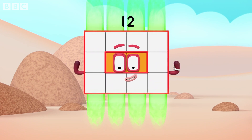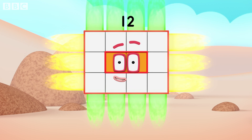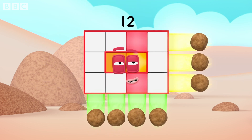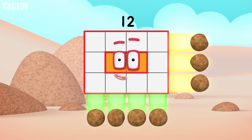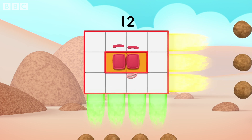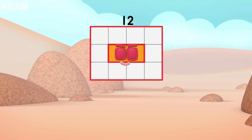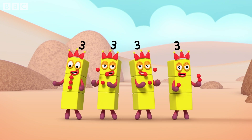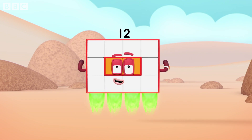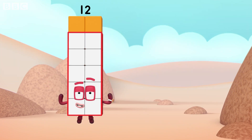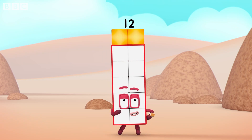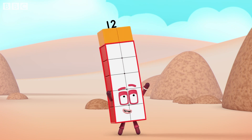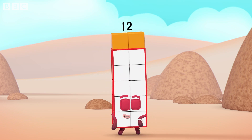I'm rectangular twelve, I'm ten and two. I make arrays, that's what I do. When I put my blocks in columns and rows, I make an array and my rectangle goes like this. Four by three's my next array. Four lots of three, you could put it that way. And this rectangular display is about to show you how it's made. Break away! I'm rectangular twelve, I'm ten and two. I make arrays, that's what I do. When I put my blocks in columns and rows, I make an array and my rectangle goes like this.